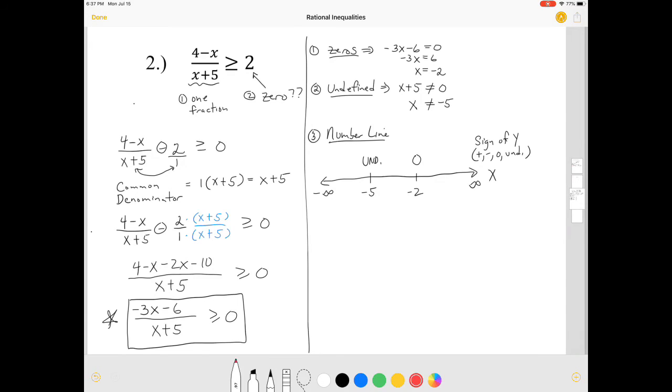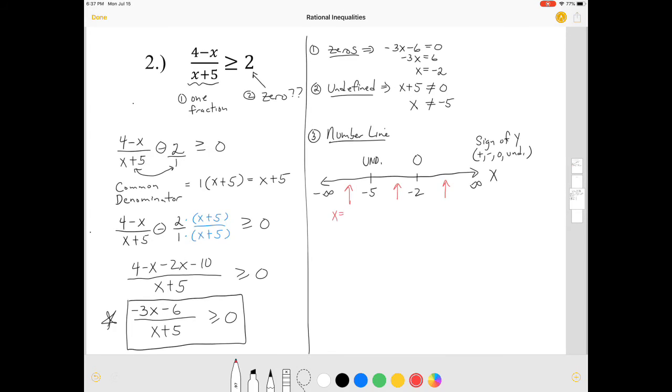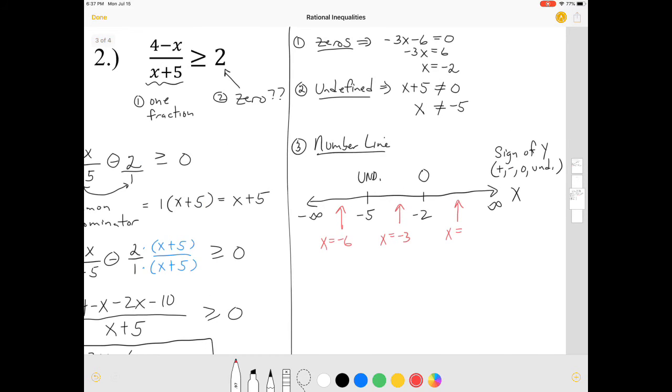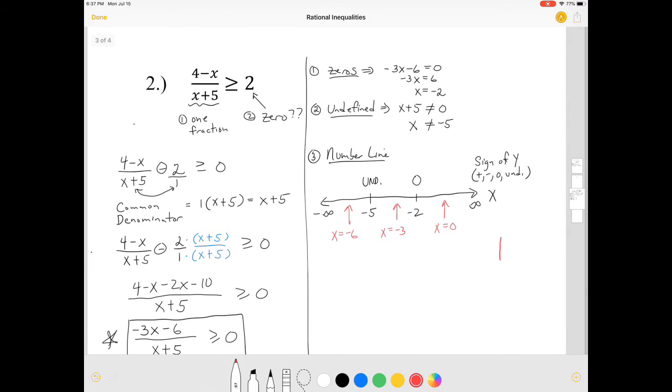All right, now, this line is now broken up into three sections. One, two, three. Remember, those sections are called intervals. So now you're going to pick a number in each interval, such as here, like negative 6. In here, we could use negative 3, negative 4. And in this section here, we could use negative 1 or zero. Zero is nice.